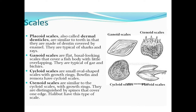Ganoid scales are flat, bony-looking scales that cover a fish body with little overlapping. They are typical of gar and bichirs. Ganoid scales are rhomboid in shape. They are arranged with little overlapping, and are present on garfishes.